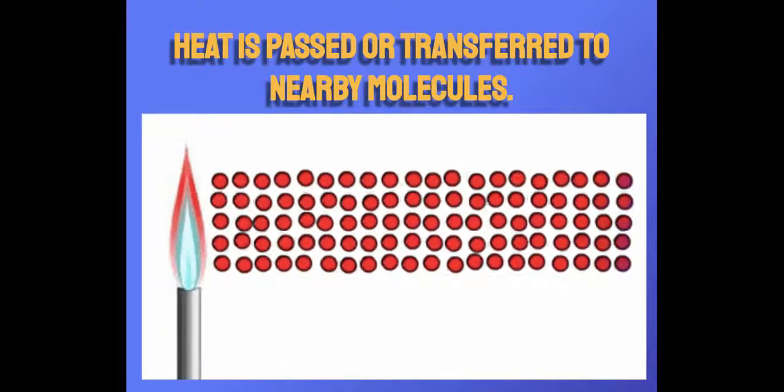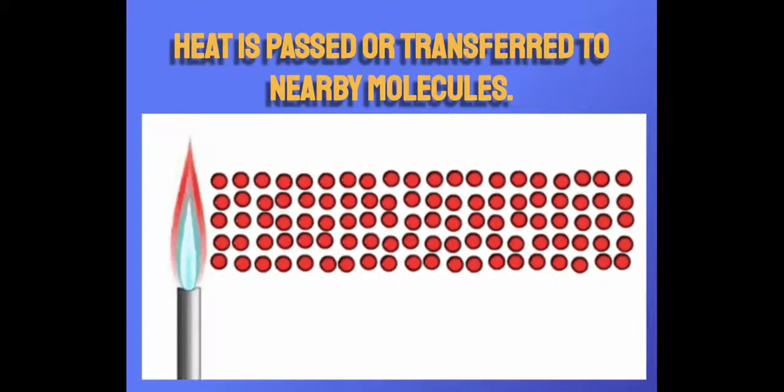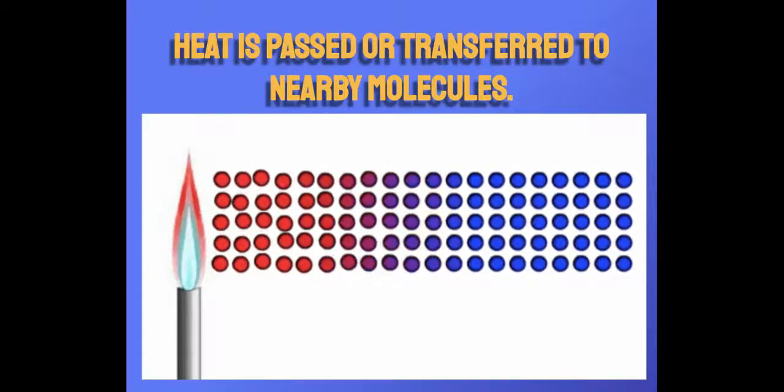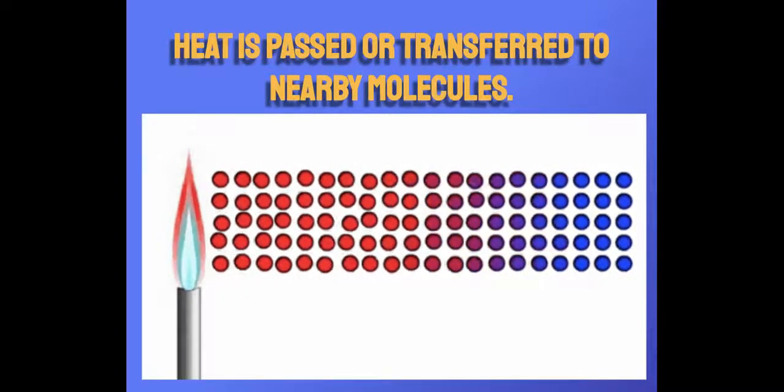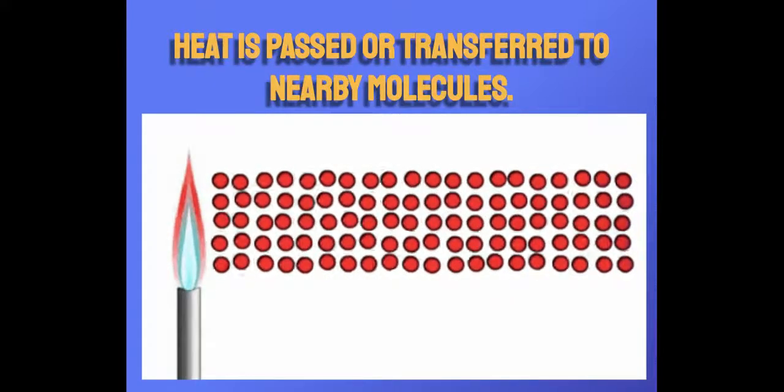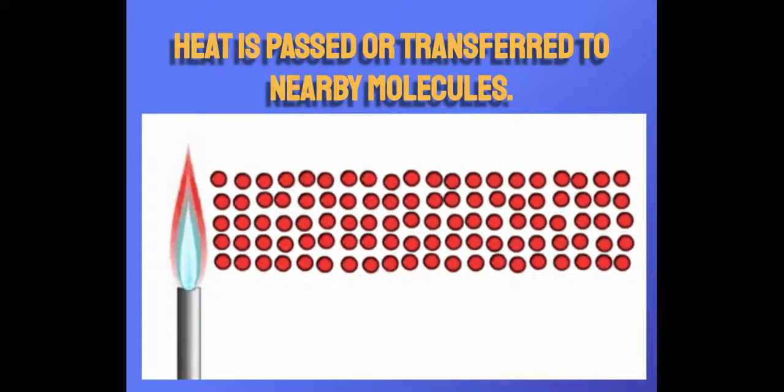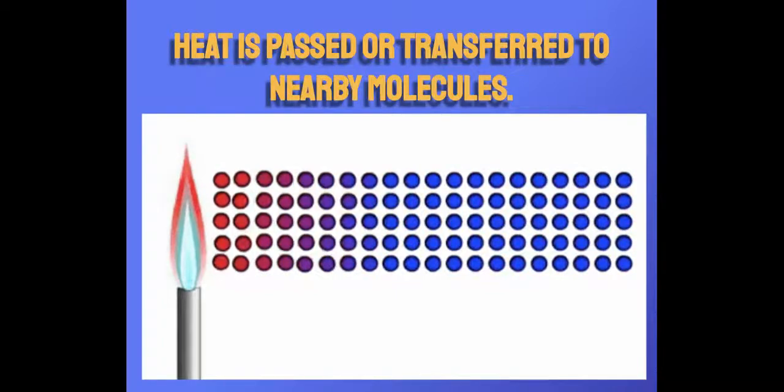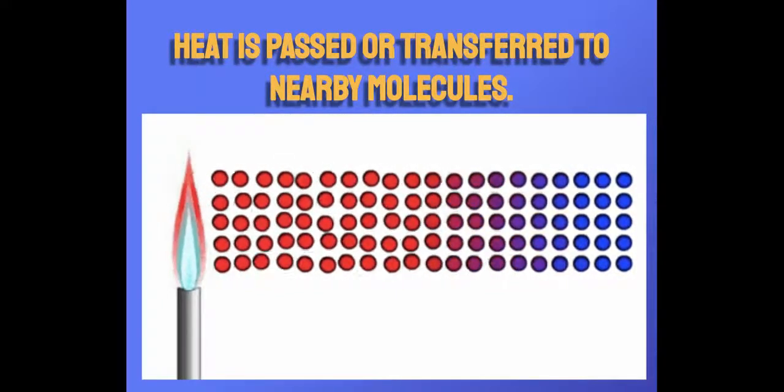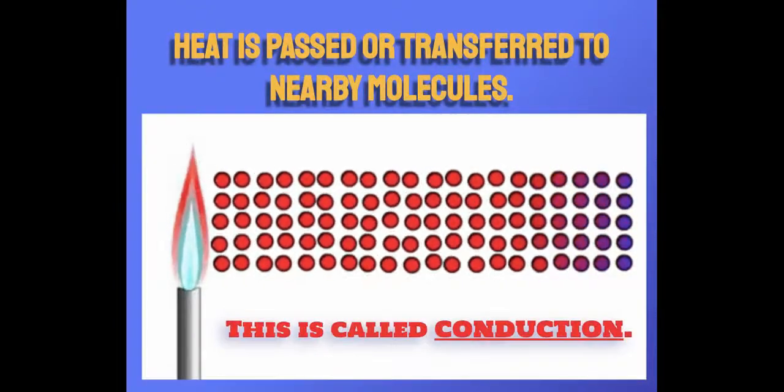So, as something gets hot, heat is passed or transferred to nearby molecules. Now these little circles here are showing you how something is getting heated. And as they turn from blue to red, they're getting hotter and you can see that the heat is traveling from one side to the other, from left to right, and the things are bouncing around a lot more. Now this process is called conduction.